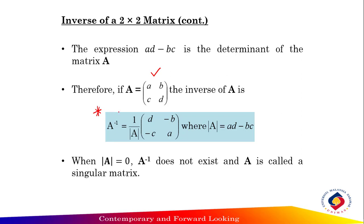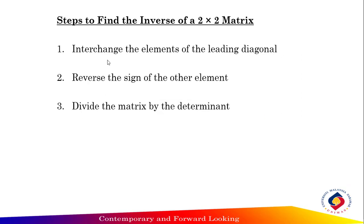Please remember and memorize this formula: A inverse equals 1 over the determinant of A, multiplied by the matrix [d, -b; -c, a], where the determinant of A equals ad minus bc. When the determinant of A equals 0, A inverse does not exist and A is called a singular matrix. The steps to find the inverse of a 2 by 2 matrix are: first, interchange the elements of the leading diagonal; second, reverse the signs of the other elements; and third, divide the matrix by the determinant using the formula.